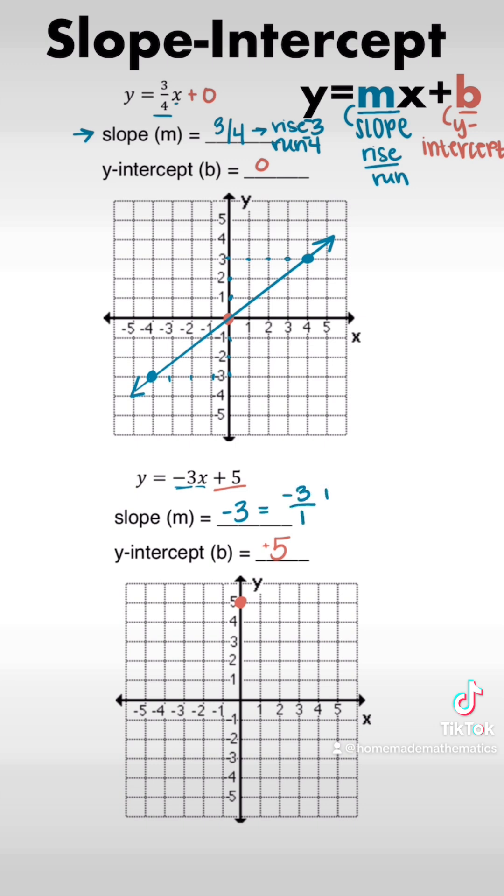And in my second one, it's a negative 3, which would be like negative 3 over 1. So we're going to go down 3 to the right 1. You could also go up 3 to the left 1.